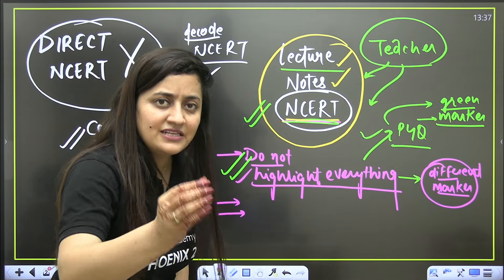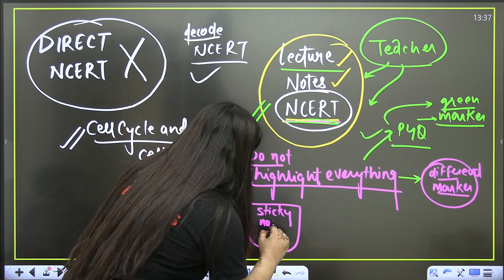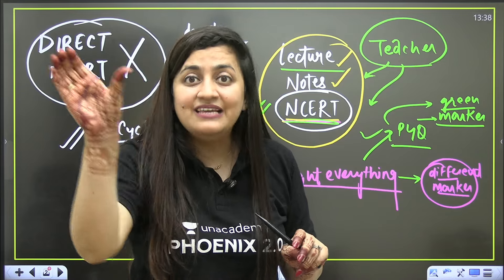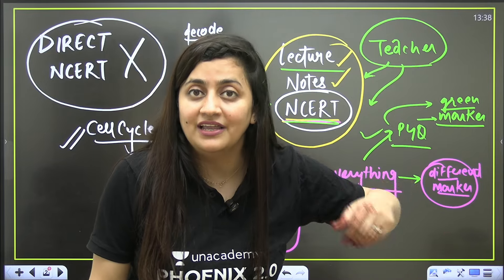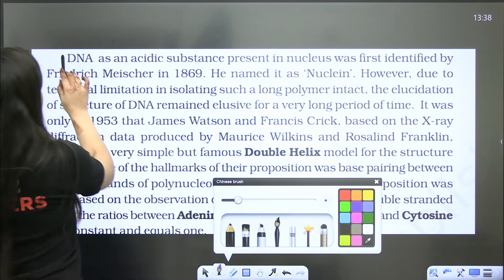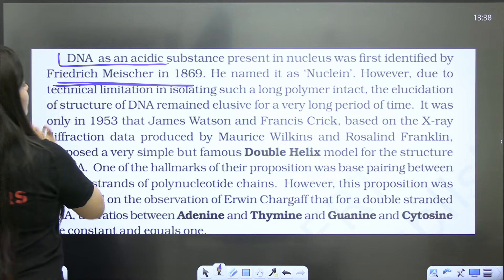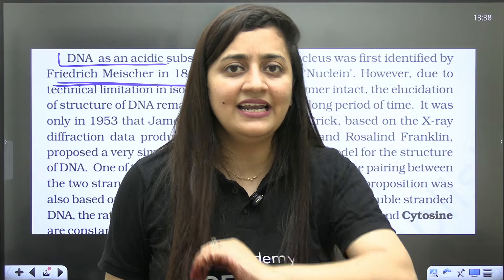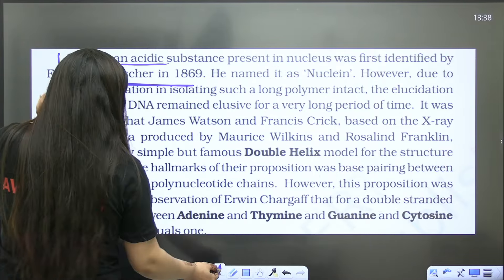Be specific here. If your teacher discusses extra points beyond NCERT, you can use sticky notes inside your NCERT itself — but make sure it is written neatly, with no clutter. It should be nicely presented, because you are going to revise this book again and again. Now, with one example from NCERT: 'DNA as an acidic substance present in the nucleus was first identified by Frederick Miescher in 1869.' From this single line, many questions have been asked in different ways — so while reading NCERT, make sure you are fully attentive.